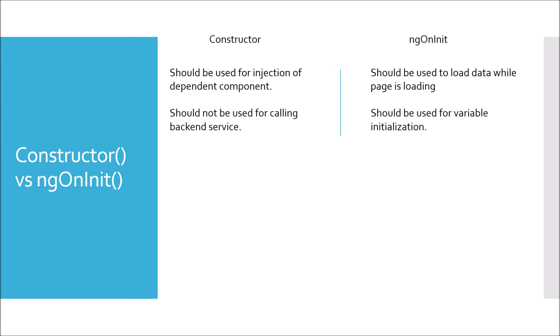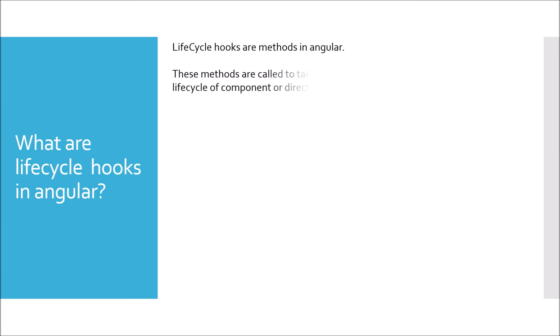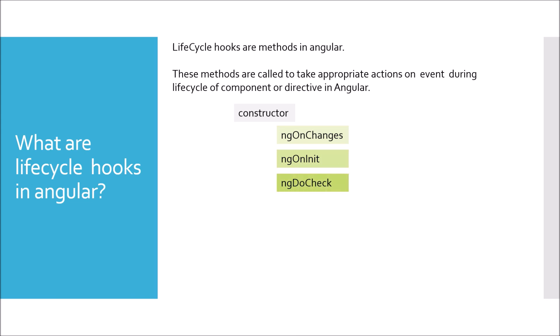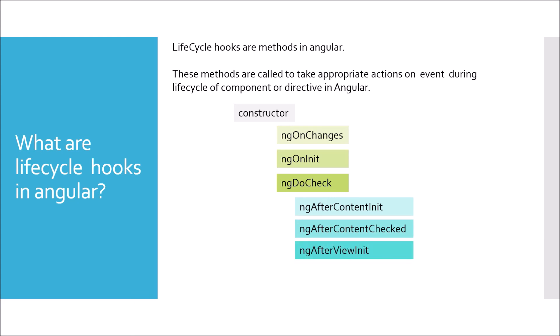Next question: what are lifecycle hooks in Angular? Lifecycle hooks are methods called to take appropriate actions on events during the lifecycle of a component or directive. The order is: constructor is called first, then ngOnChanges, then ngOnInit and ngDoCheck, then ngAfterContentInit, ngAfterContentChecked, then ngAfterViewInit, ngAfterViewChecked, and finally ngOnDestroy. All methods after the constructor are called lifecycle hook methods, which also explains why constructor is called before ngOnInit.